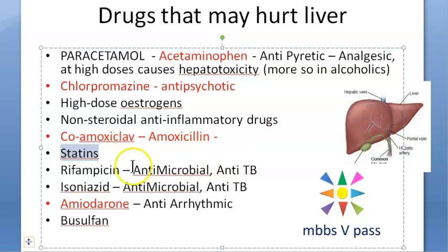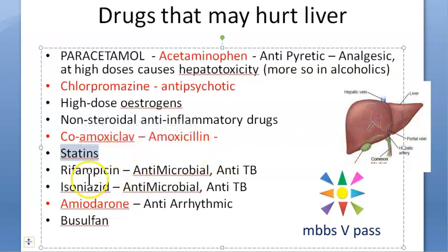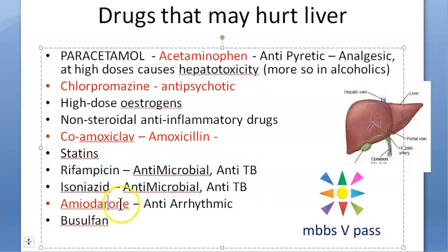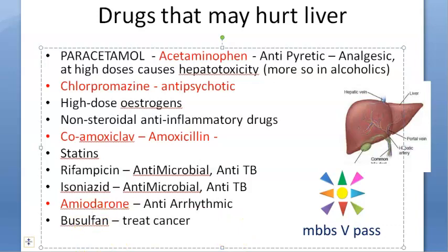Rifampicin and isoniazid — anti-tubercular drugs — are hepatotoxic, as we know. Then amiodarone, an anti-arrhythmic, is also going to hurt the liver. And busulfan, which looks like it is used for cancer treatment, can also hurt the liver.